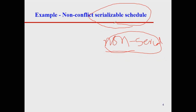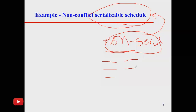So what does serializable mean? Those non-serial schedules which you can convert into a serial schedule. What we do with a serial schedule is we basically make it consecutive, one by one. In a non-serial schedule we can do things in parallel.